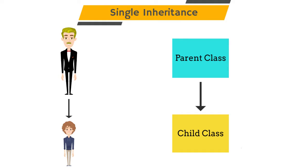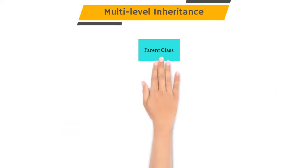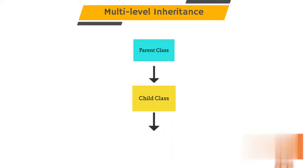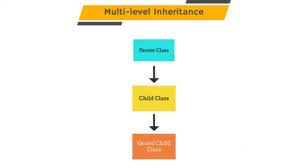It's a normal inheritance that we have seen in our last video. The second type is multilevel inheritance. In this type, we have a child class of a child class, meaning we can go up to n levels of a child class.